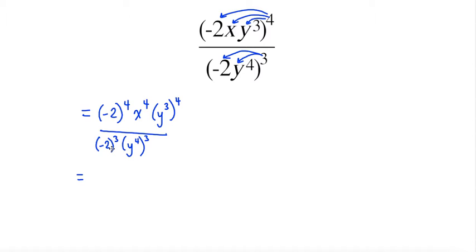So I'm just going to keep negative 2 to the exponent of 4. I still have my x to the exponent of 4, and then because I have a power of a power, I need to multiply my exponents. So I have my base of y, and then 3 times 4 gives me 12.